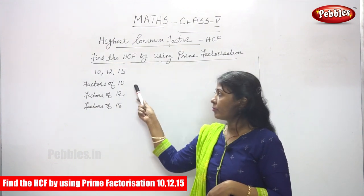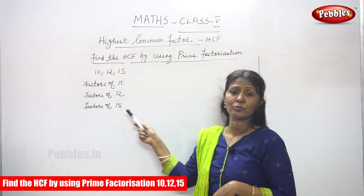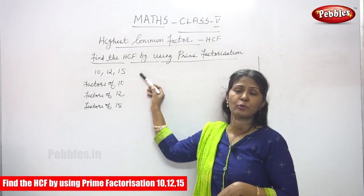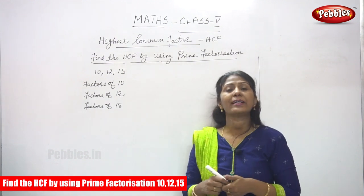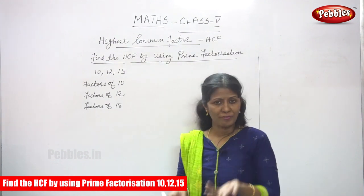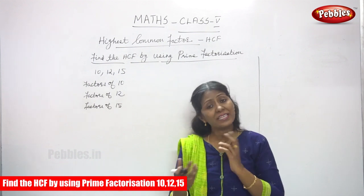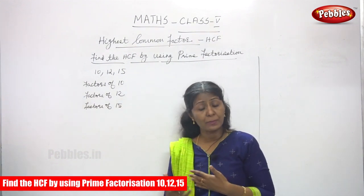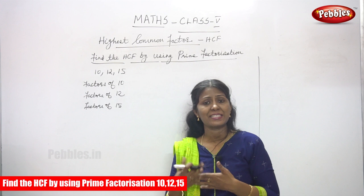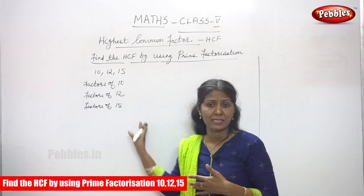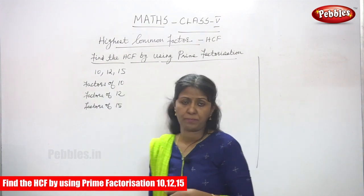So we have to find factors of 10, factors of 12, and factors of 15. Then we will find the common factors, and then we will multiply the common factors to find the HCF of these numbers.